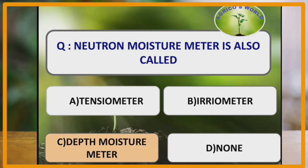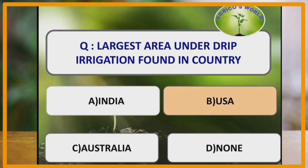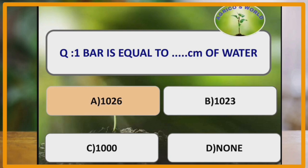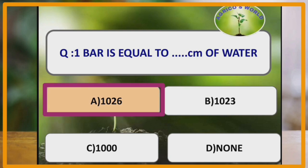Neutron moisture meter is also called as depth moisture meter. Largest area under drip irrigation is found in the country USA. One bar is equal to 1026 centimetres of water.